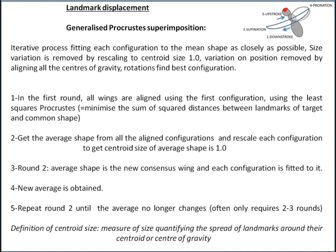The centroid size of the average shape is set to one, then you proceed to round two. The average shape becomes the new consensus, and each configuration is fitted to that new consensus. A new average is obtained, and this repeats until the average no longer significantly changes — typically requiring only two or three rounds.